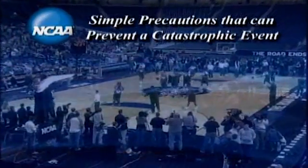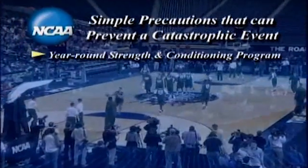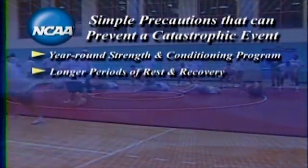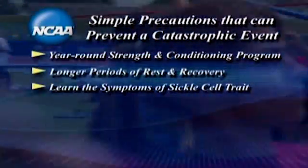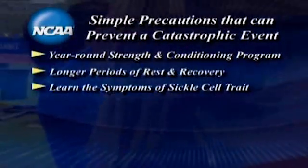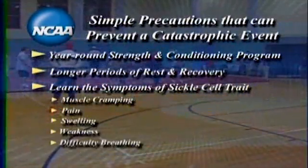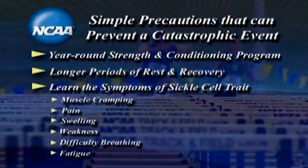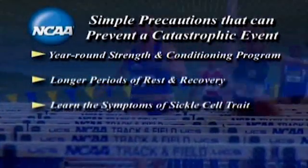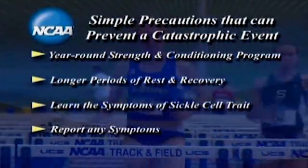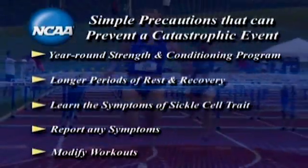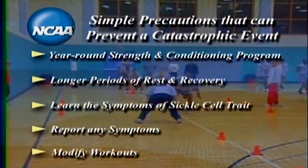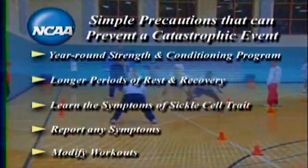There are simple precautions that can be implemented to prevent a catastrophic event. Develop a year-round strength and conditioning program. Train with pace progressions, allowing longer periods of rest and recovery. Learn the symptoms that student athletes with sickle cell trait will present — muscle cramping, pain, swelling, weakness, difficulty breathing, or fatigue — and stop their activity if these appear. Allow athletes to immediately report any symptoms to medical staff or coaches without fear of punishment. Modify workouts in conditions of extreme heat or high altitude, or if the student athlete has a known illness, with an emphasis on hydration and recovery, or cancel the workout completely.